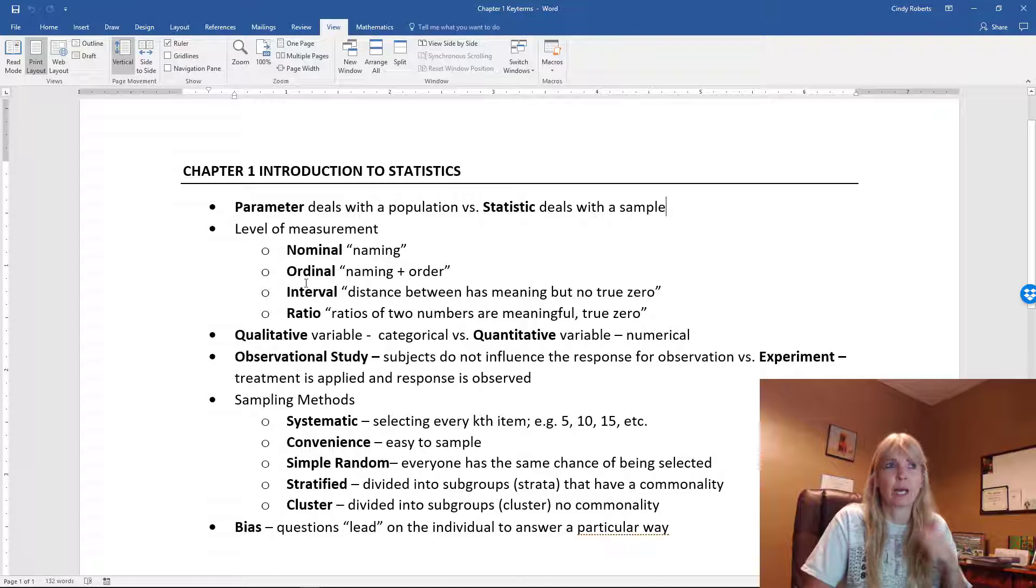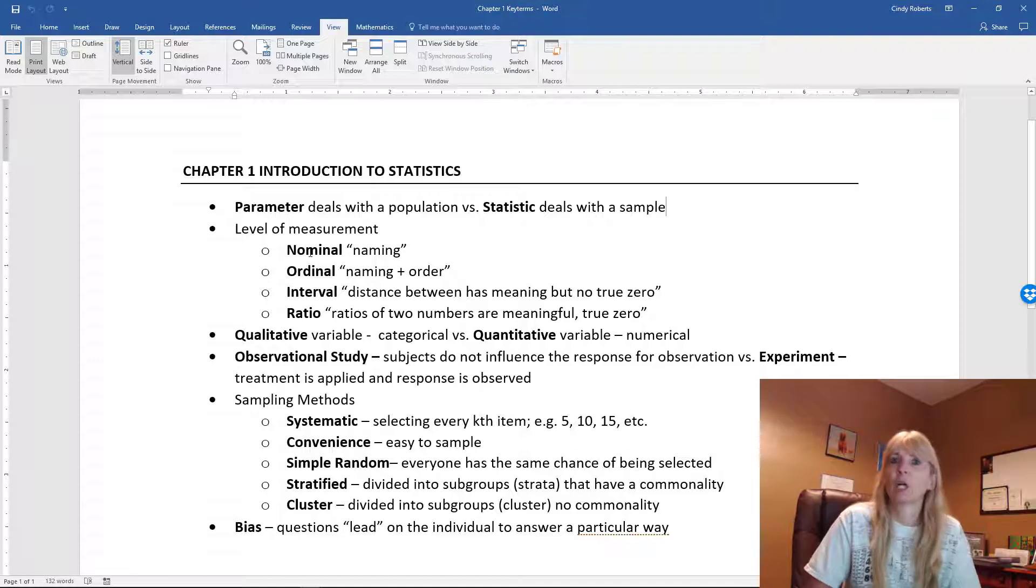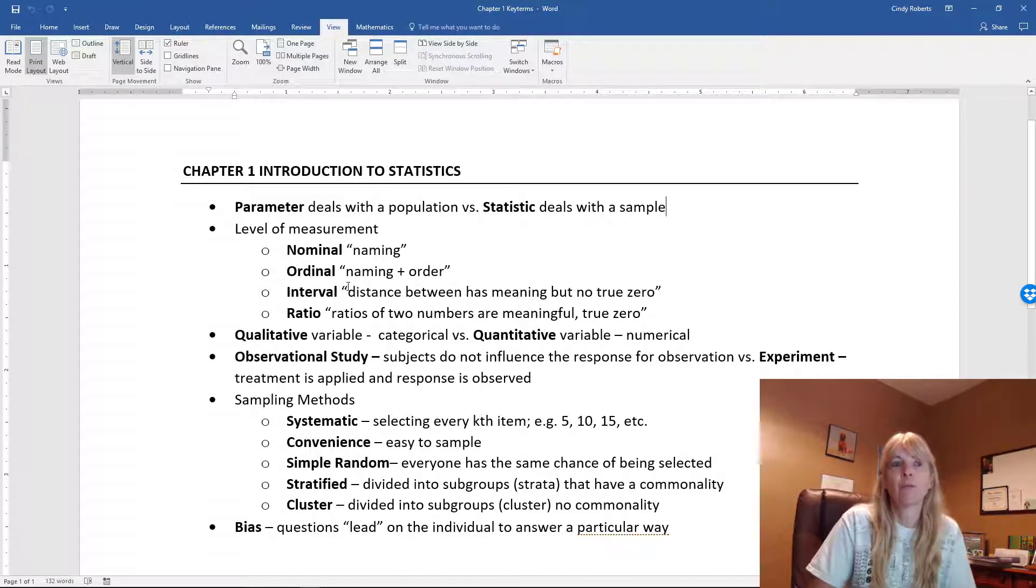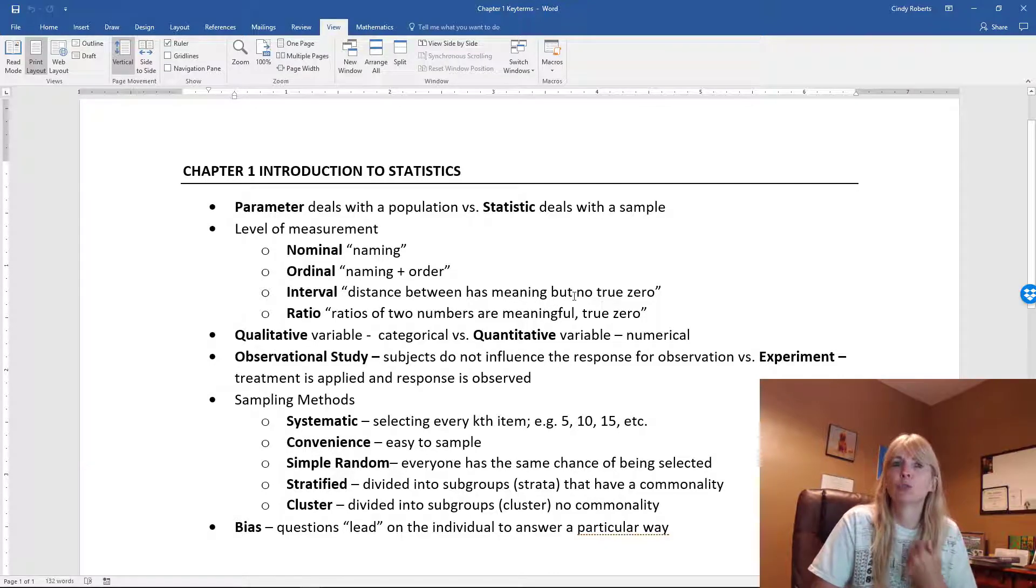Then we have different types of variables that have levels of measurement: nominal, maybe something like different colors of cars; ordinal, where they're naming but now we put them in order, maybe my top five favorite movies; interval, where you're looking at distance between has meaning but no true zero. In other words, what we mean by no true zero is that means it's non-existent.